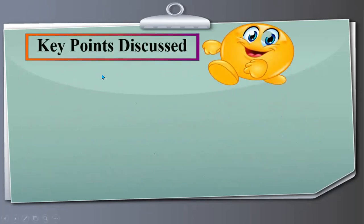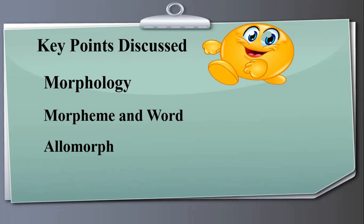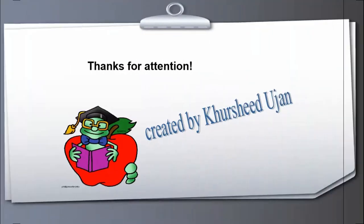Here are the key points discussed today. We learned about morphology, morpheme, word, and allomorphs, and defined these three terms in a very simple way. This was a shorter lecture. Thanks for your attention. Hopefully this was a very helpful and interesting lecture for all of you. Assalamualaikum.